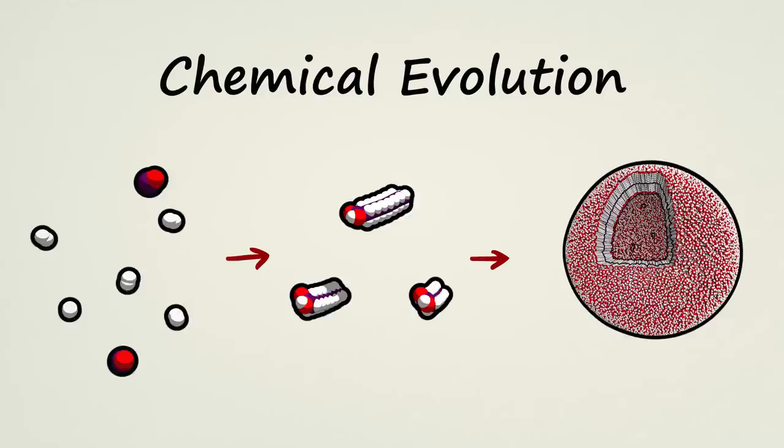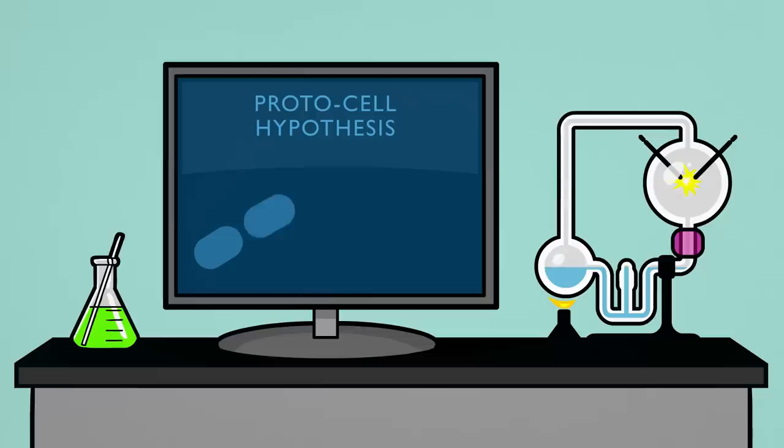Chemical evolution can give rise to new characteristics and abilities. Because of this, scientists hypothesize that under the right circumstances, chemical evolution could give rise to systems that are fully capable of reproduction.